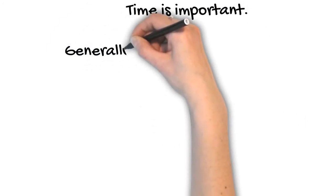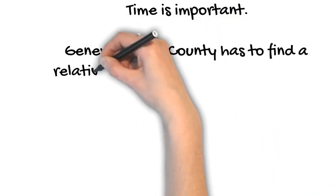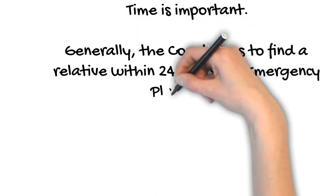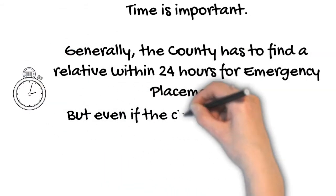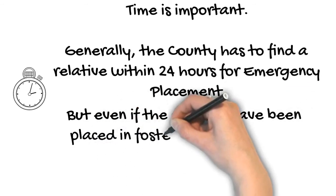The county is required to find relatives or non-related extended family members within 24 hours. But even if the children are placed in foster care and not with you or a relative, you can still petition that they be placed with you afterwards.